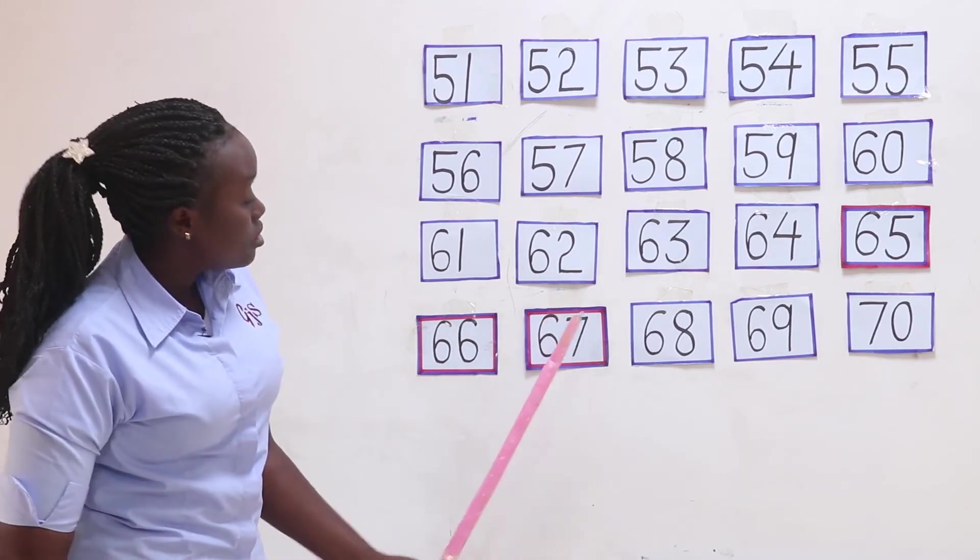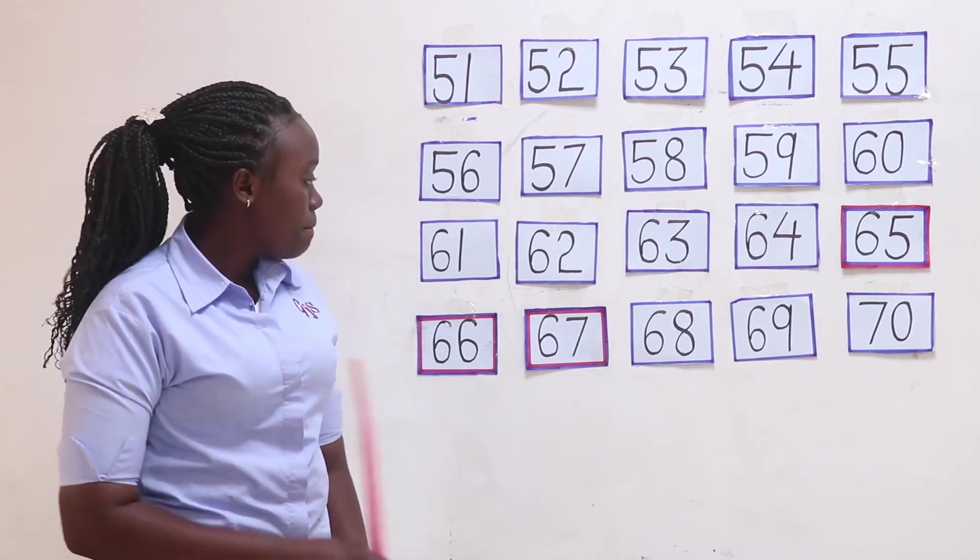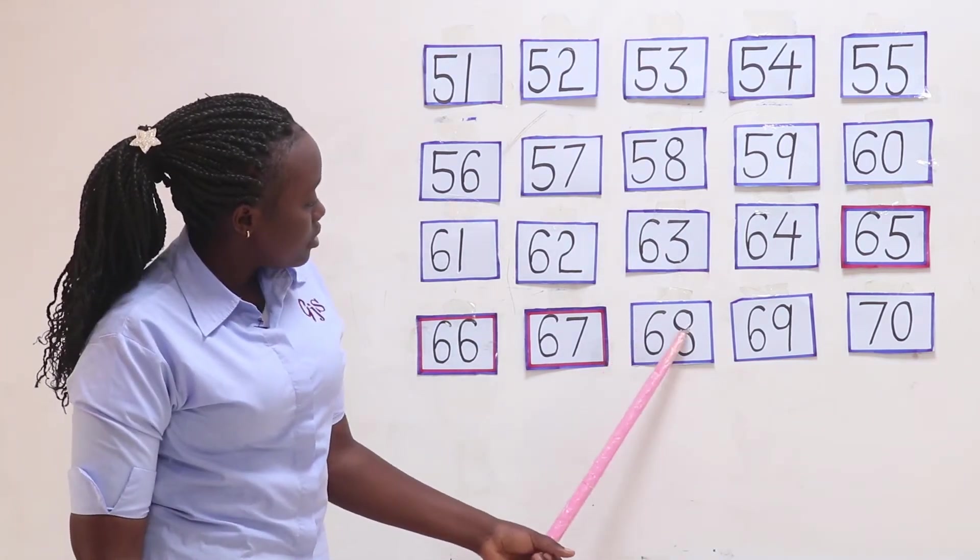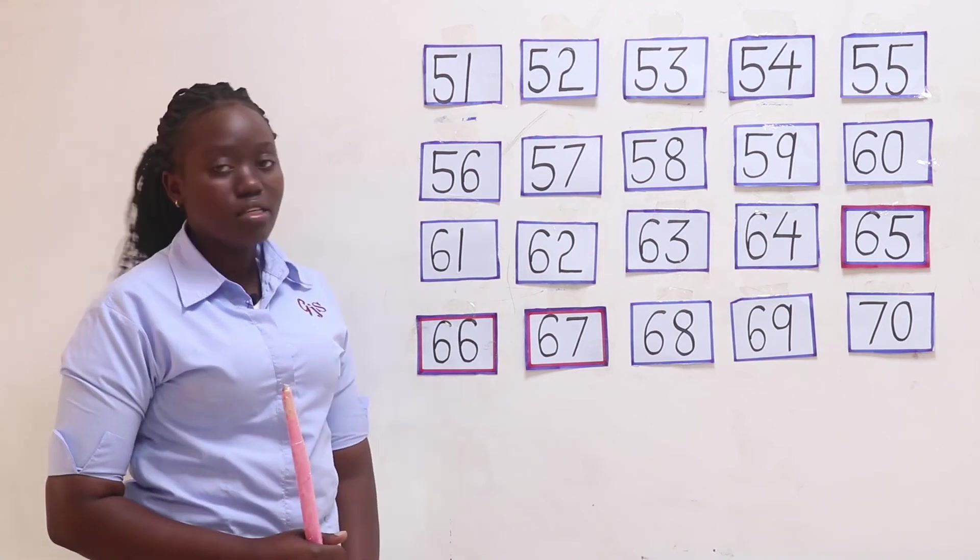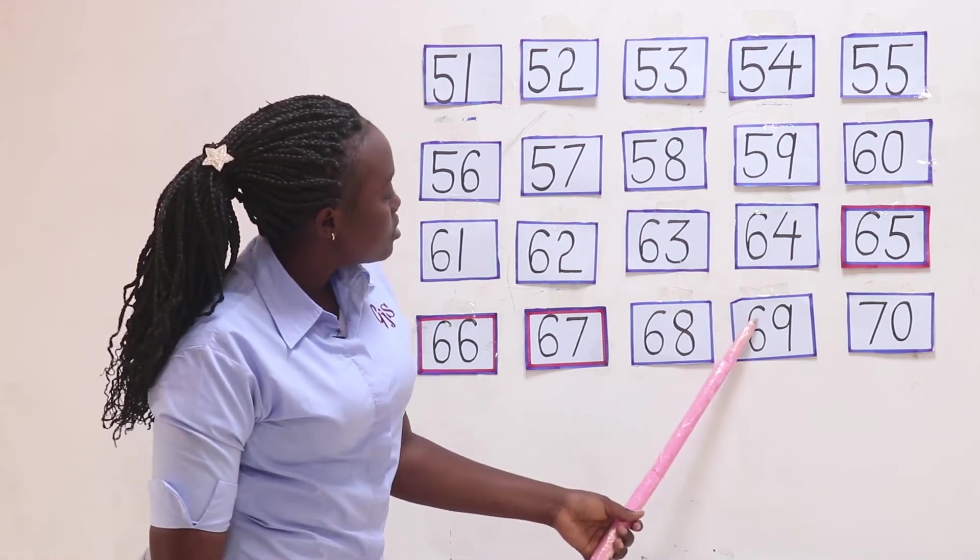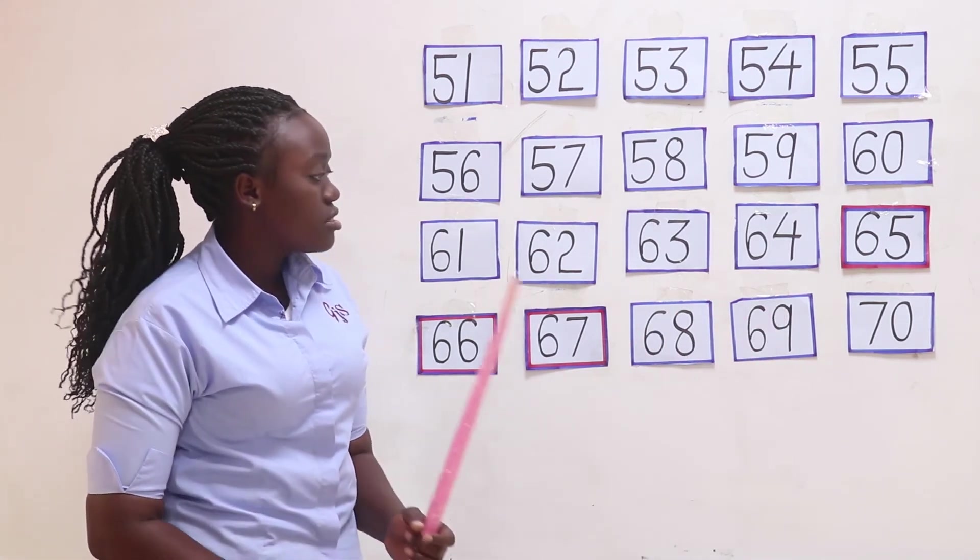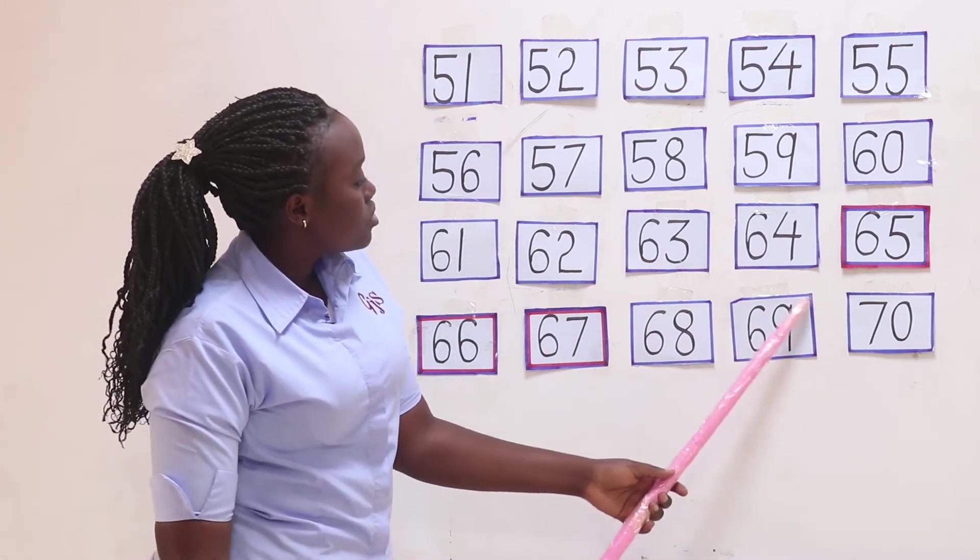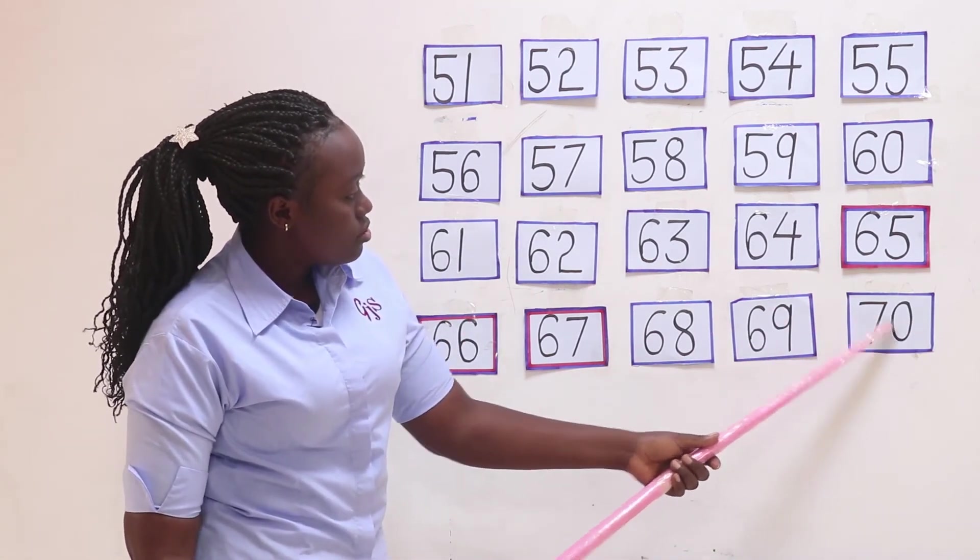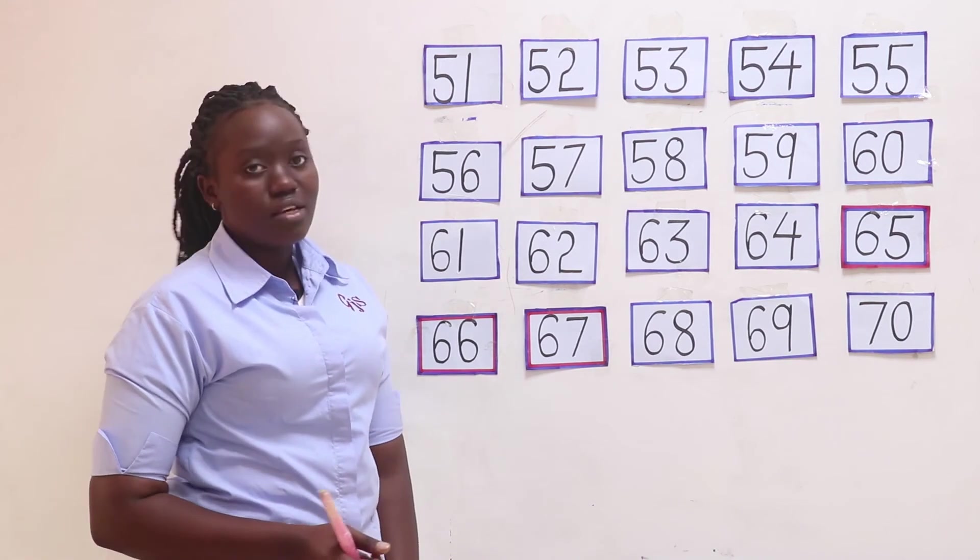We have 6 and 7, and we read it as 67. We have 6 and 8, and we read it as 68. Then we have 6 and 9, and we read it as 69. And last we have 7 and 0, and we read it as 70.